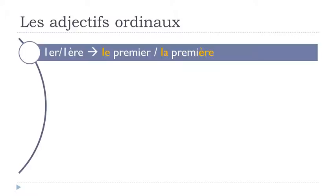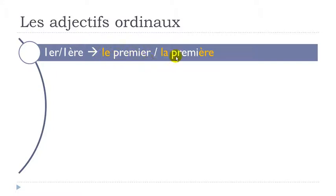We'll start with the first. As usual in French, remember we've got the difference between the masculine form and the feminine form. Each time we'll have the masculine form and the feminine form. They can be written in short form. So we pronounce them: le premier, la première.